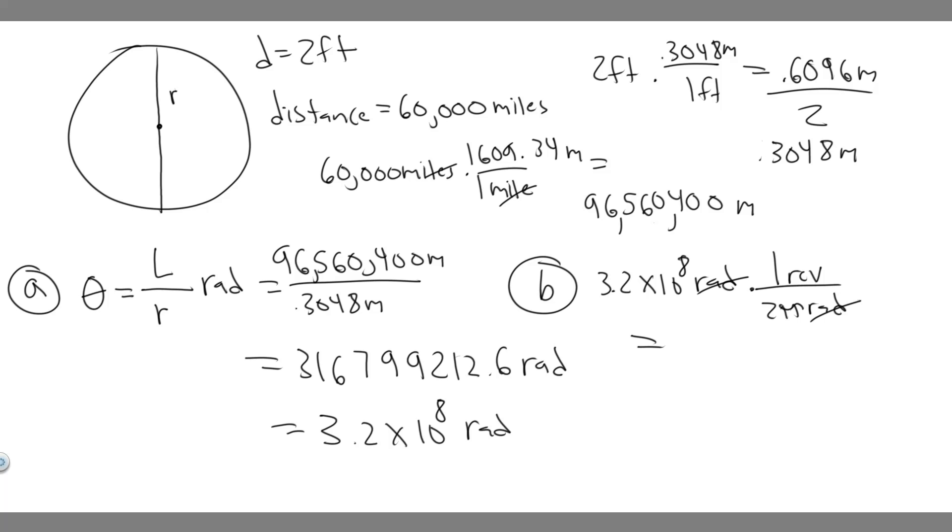So if you go ahead and do that, plug in your calculator, 3.2 times 10 to the 8th, and then divide by 2 pi. So when you do that, you'll get 50,929,581.79. And I'm just going to put it in scientific notation. So 5.1 times 10 to the 7 revolutions. So this is going to be your answer to B, and hopefully you found this useful.